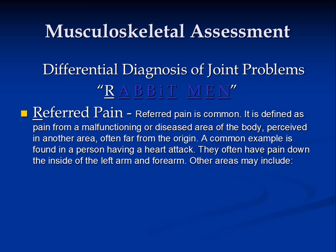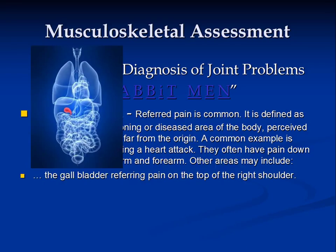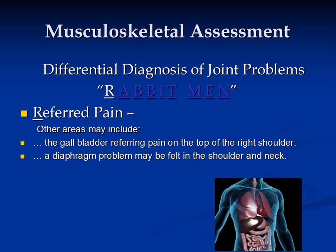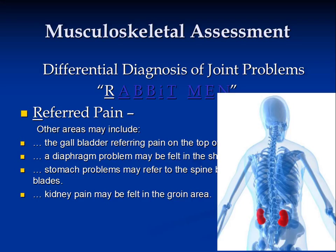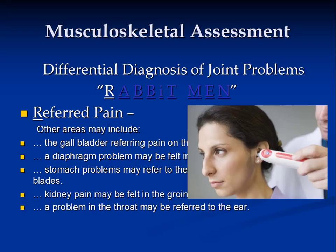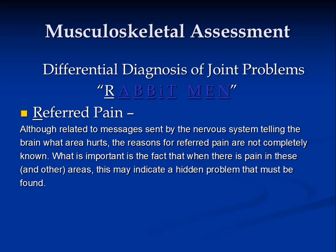Is the pain referred pain? Referred pain is pretty common. Read this information regarding referred pain — pause the presentation to do so. Referred pain may include that common from a heart attack, with pain spreading to the jaw and down the arm, or gallbladder pain referring to the top of the right shoulder. A diaphragm problem may be felt in the shoulder and neck. Stomach problems may refer to the spine between the shoulder blades. Kidney pain may be felt in the groin area, and a problem in the throat may refer to an ear. Intestinal dysfunction may be felt in the middle or low back. Although related to messages sent by the nervous system telling the brain what area hurts, the reasons for referred pain are not completely known.